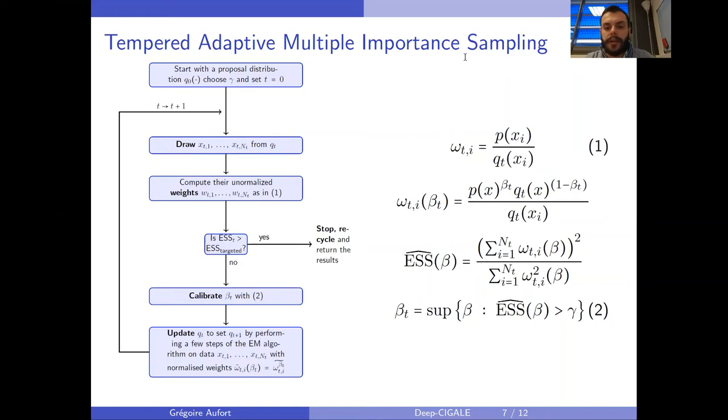The effective sample size is an estimation of the number of draws you have to do in the true target in order to have an estimator with the same variance as your importance sampling estimator. So the higher it is, the better your estimation is.